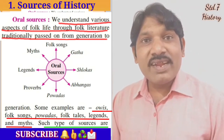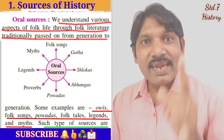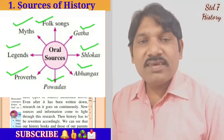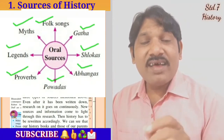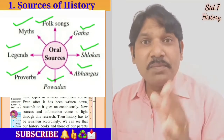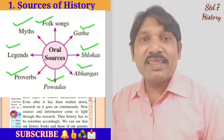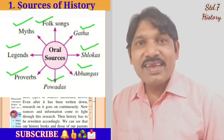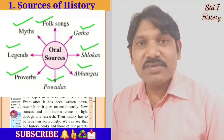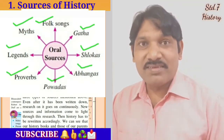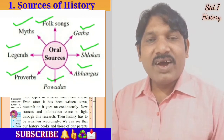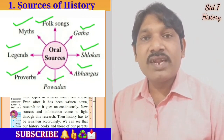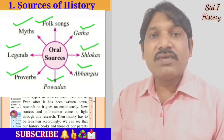The sources included in oral sources of history are: folk songs, gathas, shlokas, abhangas, powadas — which are sung in the praise of somebody — proverbs, legends, and myths. All these sources are included in the oral sources of history. Such sources are called oral sources because they are transmitted orally from one generation to the next.